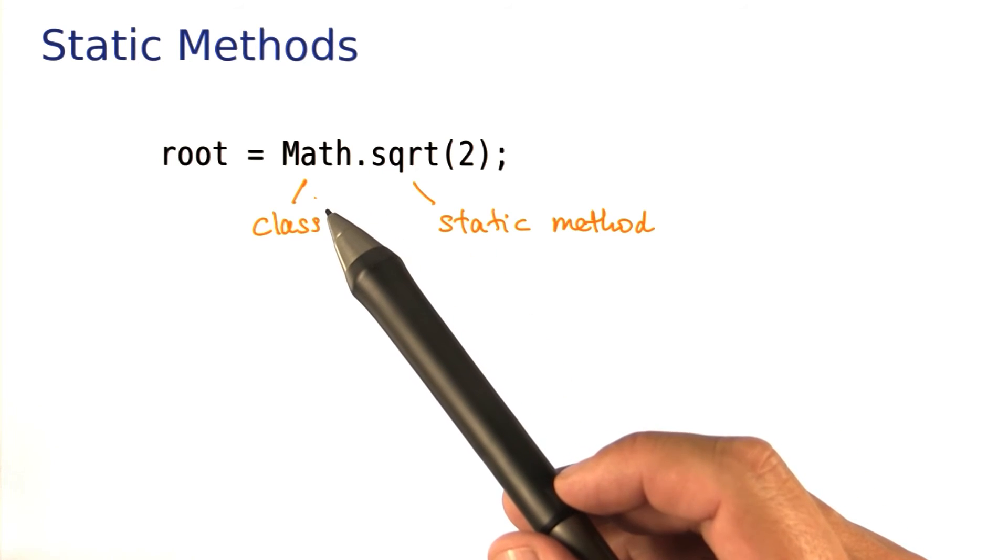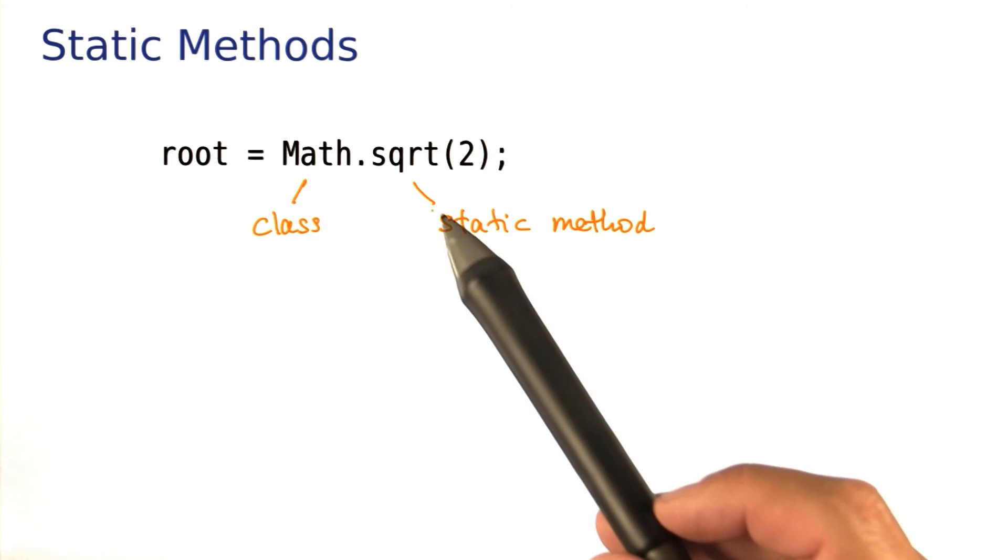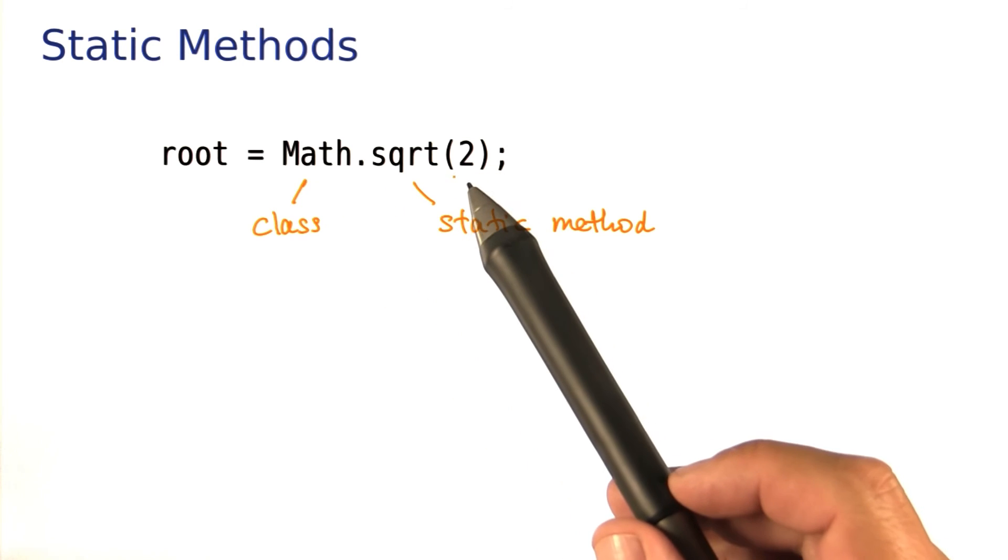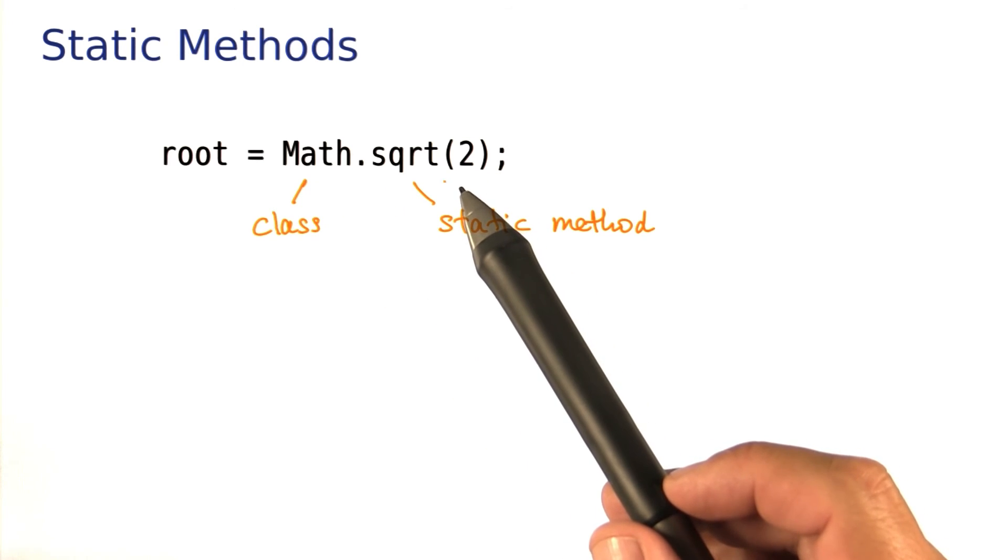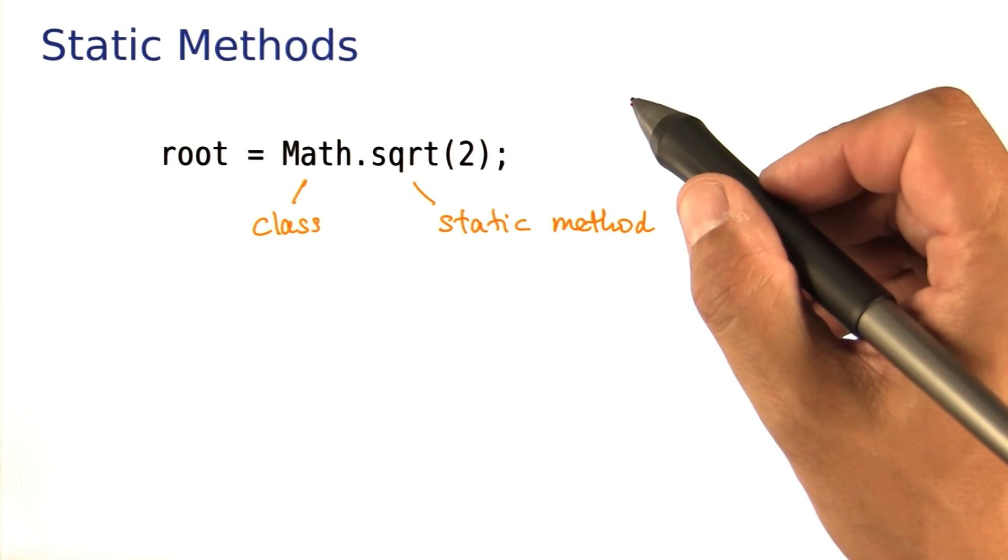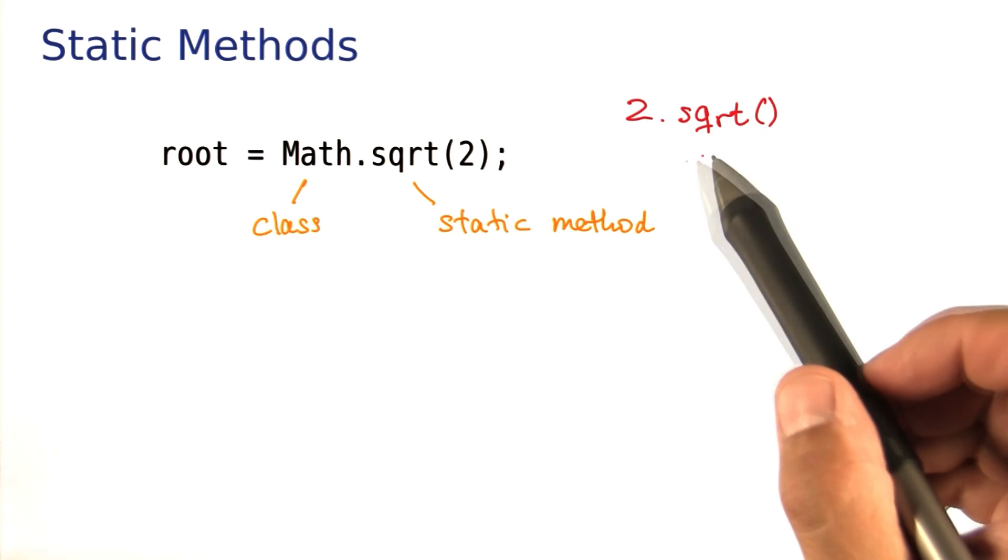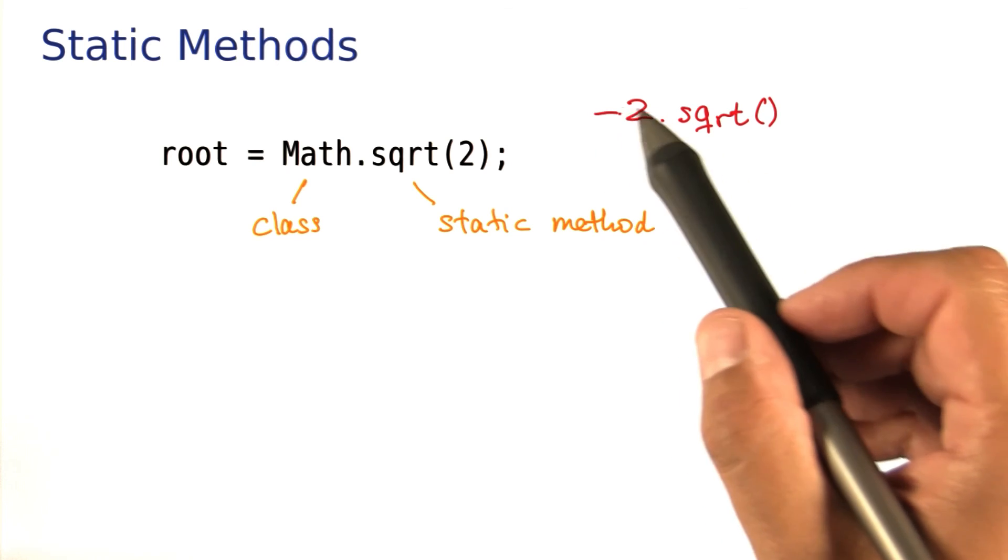Now you may wonder, why did we have to use a static method? Why couldn't we just call the method on the number two? Well, that's what it's like in Java. In Java, numbers are not objects, so you can never call a method on an object. A call such as two dot square root might be more logical, but it's an error.